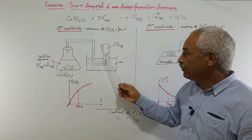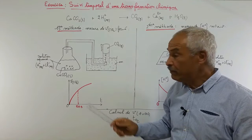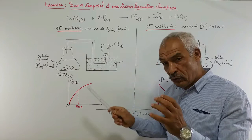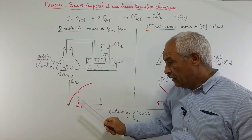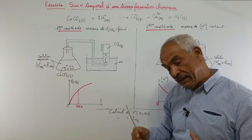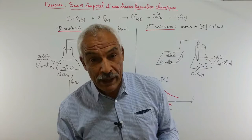Nous allons mesurer à des instants différents le volume du gaz formé. Cette éprouvette est graduée, donc on peut lire directement sur la graduation la valeur du volume du CO2. Nous allons tracer la courbe V de CO2 en fonction du temps. C'est une courbe croissante, c'est normal, parce que le volume du CO2 est un produit, donc c'est une fonction croissante.